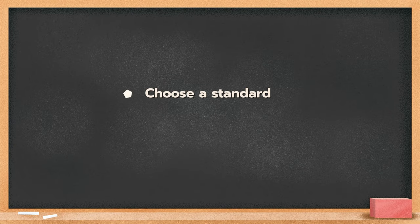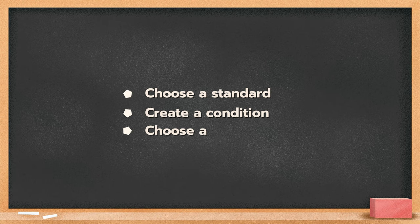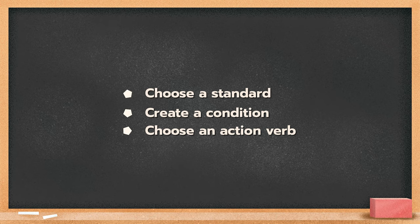Follow this three-step process to create learning objectives. First, choose a standard — what do you want the outcome or product of the lesson to be? Second, create a condition, such as: after completing the lesson, the students will be able to. Third, choose an action verb to describe the performance — what will the students have to do to succeed? For example: by the end of the lesson, students will be able to describe their dream vacation to the rest of the class using at least four key vocabulary words and at least one visual aid.